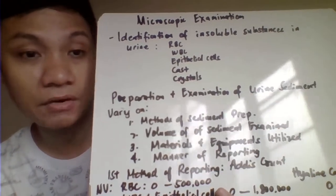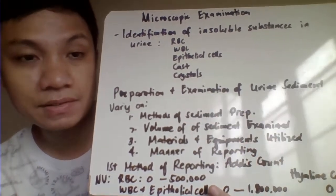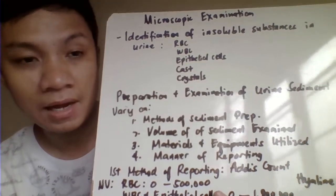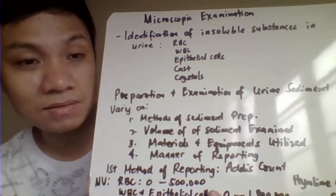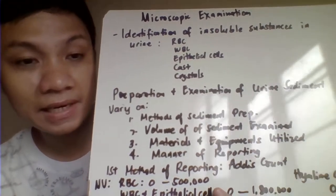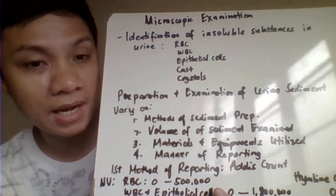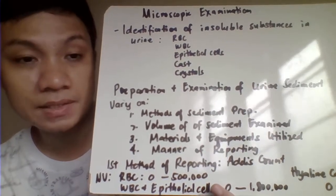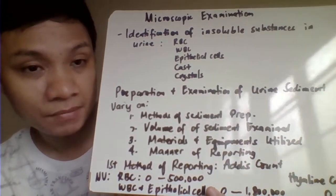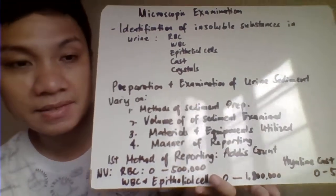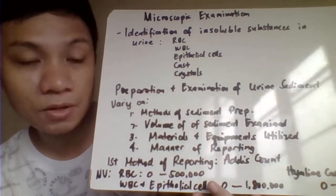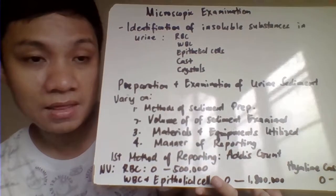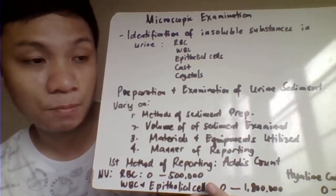We need to determine if findings are really pathologic or non-pathologic. For example, if you receive a specimen noted in the macroscopic examination as cloudy, microscopic examination is the best confirmation of whether that cloudiness is really because of pathologic sediments or substances, or because of some non-pathologic substances which caused the turbidity. Microscopic examination is essentially the identification of insoluble substances — those that do not dissolve — so we are able to identify them under the microscope.